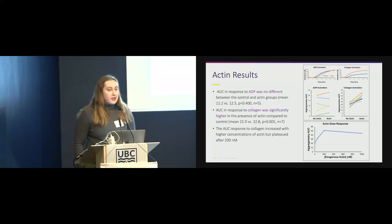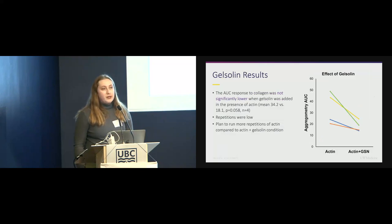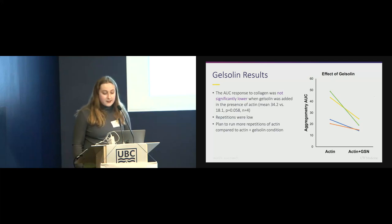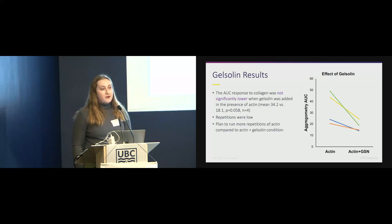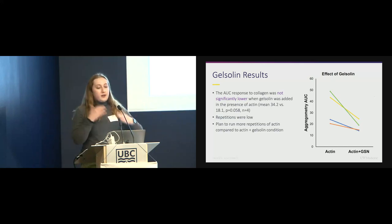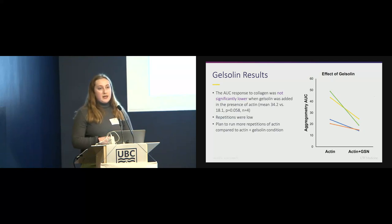For gelsolin, our n is really low, so this is really preliminary work. We only had four repetitions with a p-value of 0.58, so not significant, but maybe a trend. I don't want to overstate the results. But it could be interesting to continue to repeat this to see if we can find a statistically significant decrease in the effects that actin has — rebuilding hemostasis by undoing the effects of actin through capping of the actin filaments.